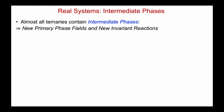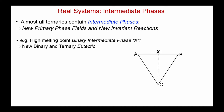For each intermediate phase that's introduced, we'll introduce new primary phase fields and new ternary invariant reactions. Let's look at one or two simple examples. First, here in my ABC system — assuming no solid solubility just to make things simple — I've introduced a high melting point binary intermediate phase X, perhaps with the formula AB. And this in turn will introduce, because it's high melting, a new binary and ternary eutectic.